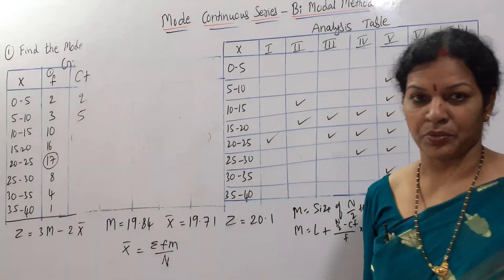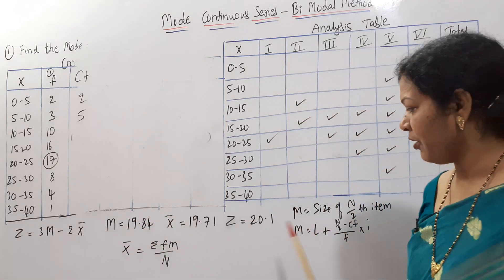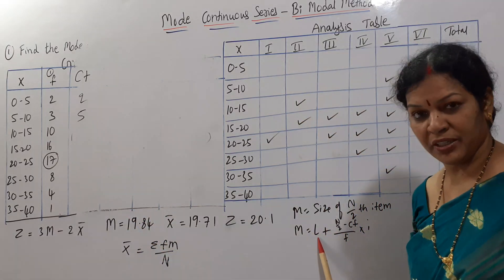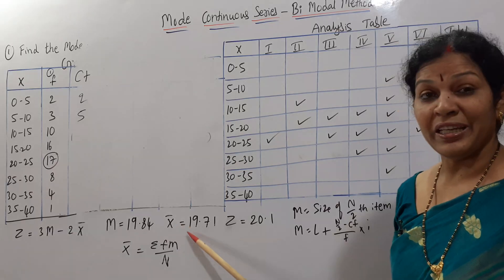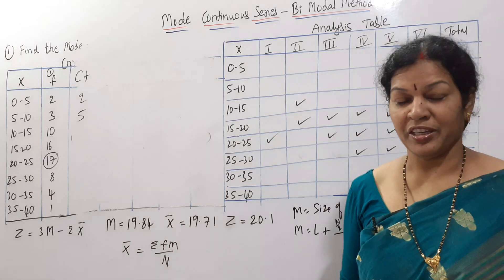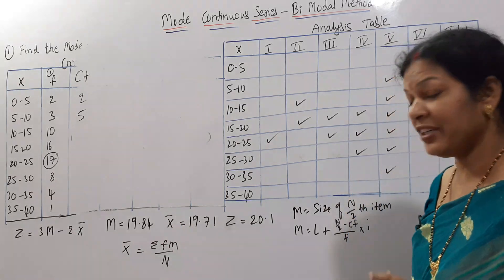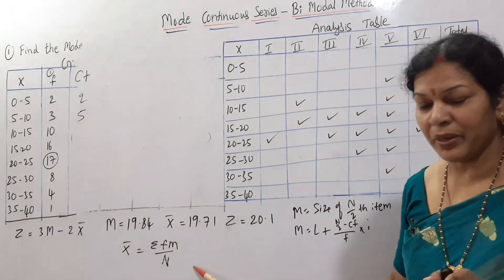Applying the formula, the median is 19.84. The mean formula is X̄ = Σfm / N.